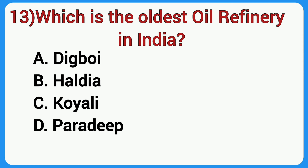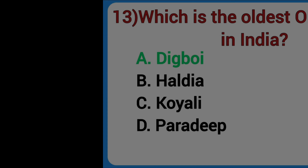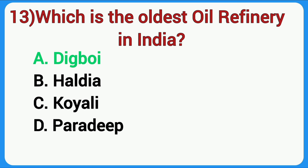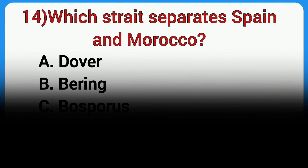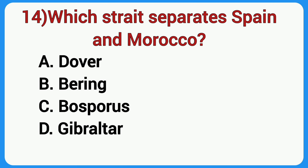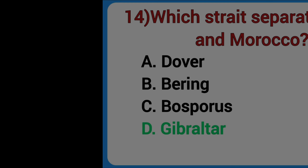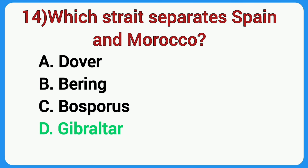Which is the oldest oil refinery in India? Answer is Digboi. Which strait separates Spain and Morocco? Answer is Gibraltar.